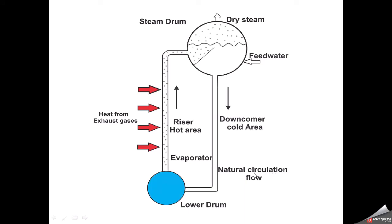This is called natural circulation flow because the water moves due to its density difference. Cold water has high density and hot water has low density, so it rises up. If we apply some force for circulation, this is called forced circulation.